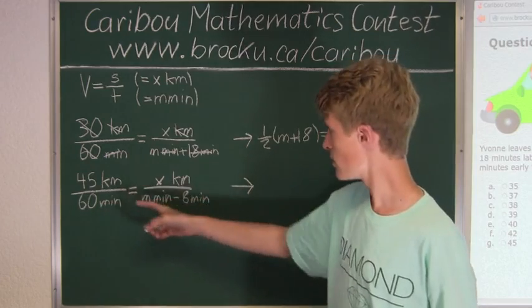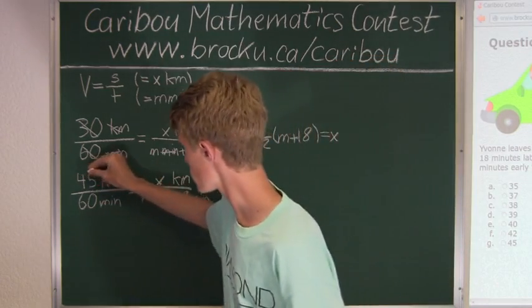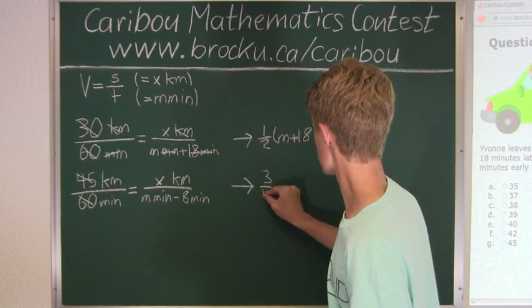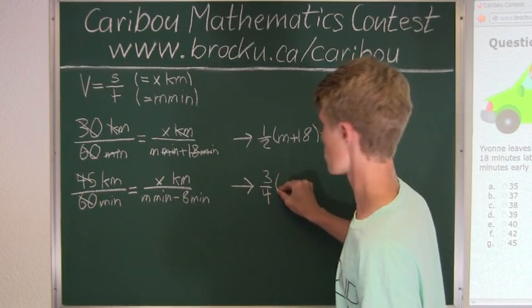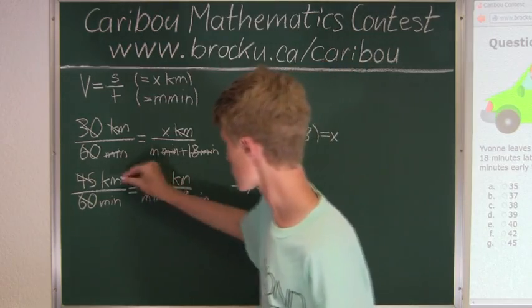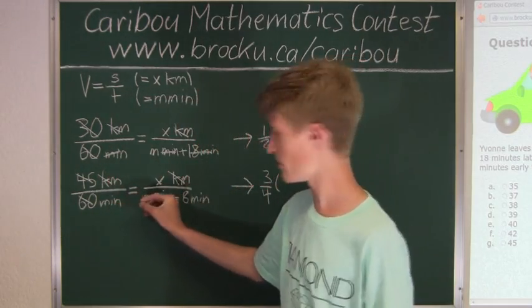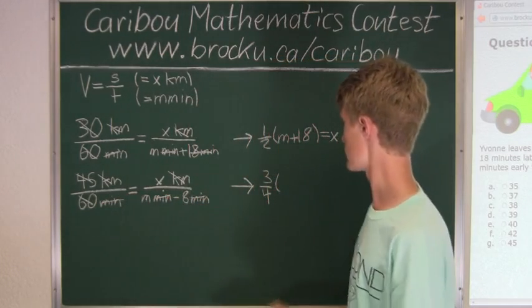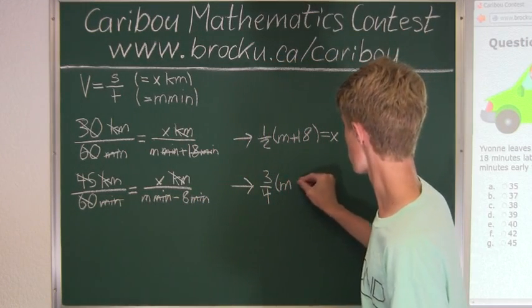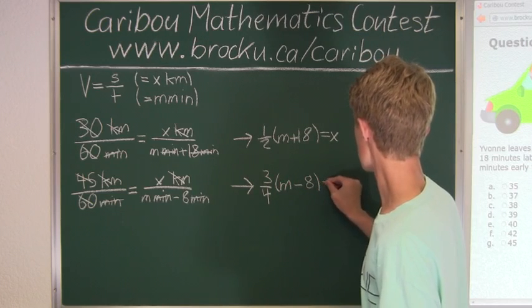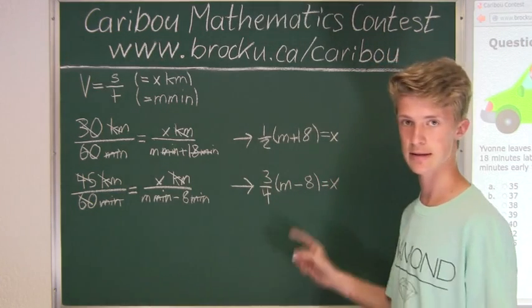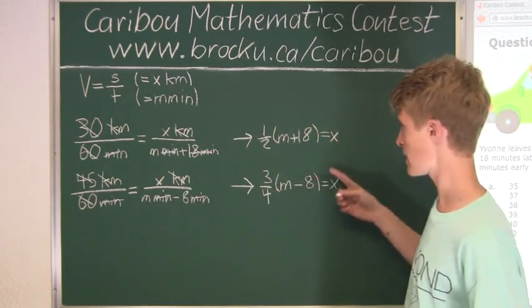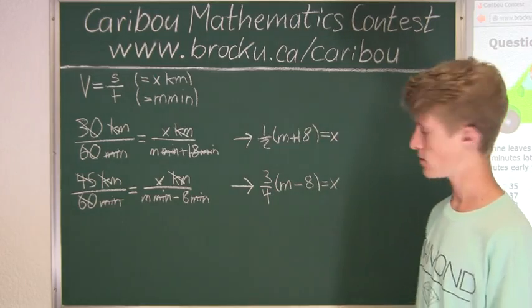So now we will do that for here. So then we have 3 over 4. And then the kilometers cancel out, and so do the minutes. So then we have N minus 8. And as we can see, that is equal to 3/4 X. So we know that since that is equal to X, and this is equal to X, this must be equal to this.